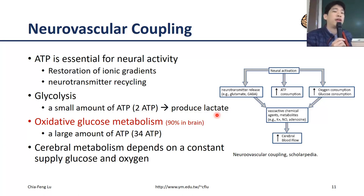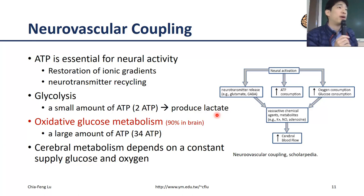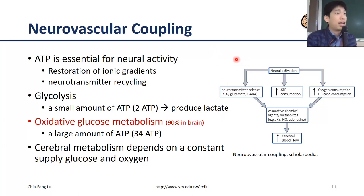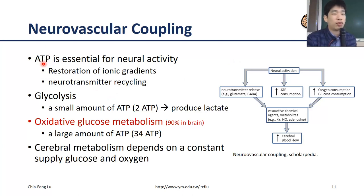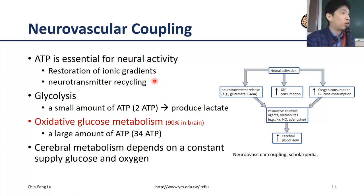Now we know that neural activation or action potential is the very first step of neuronal function. But what happens after? We need energy. During the neural activity itself, no energy is needed — ions follow gradients passively. But once everything happens, we need to restore everything: sodium-potassium pumps must restore the ion gradients, and neurotransmitters must be recycled. So energy demands occur after the generation of neural activity.